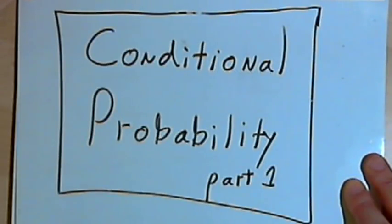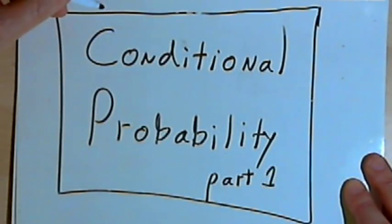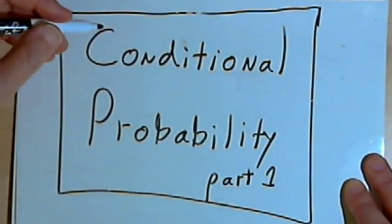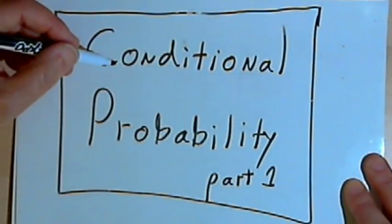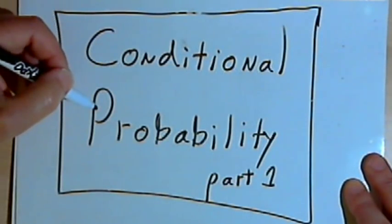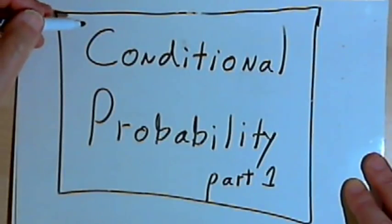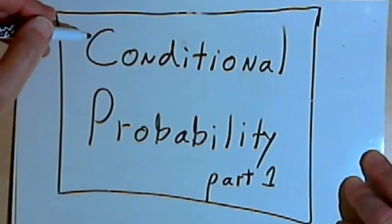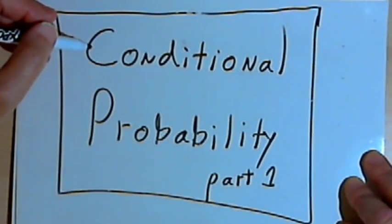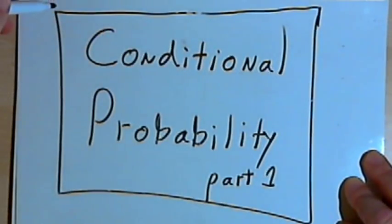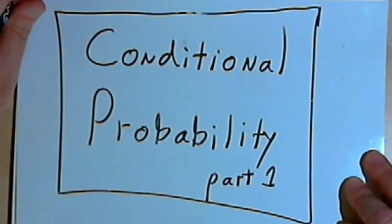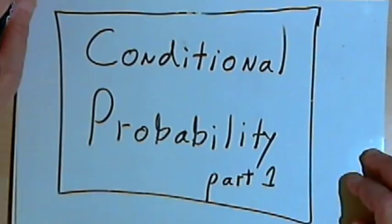This video is provided as supplementary material for courses taught at Howard Community College. This is going to be the first of a series of videos about conditional probability. Conditional probability can be somewhat difficult to understand, so I want to start with a couple of fairly simple, intuitive examples and then go on to something more difficult.